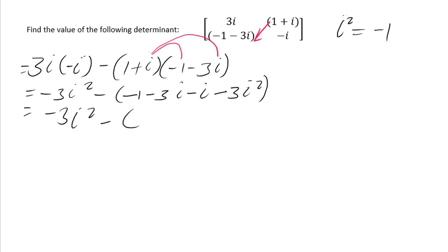So we leave the minus 1 as it is, and this one when I say minus 3i minus i, which is minus 1, we get minus 4i minus 3i².